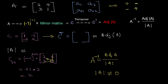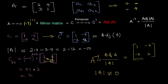To get the cofactor transpose, I turn rows into columns, giving the adjoint matrix as 1, minus 4, minus 3, 2. For the determinant, I multiply 1 by 2 and subtract 3 times 4: the determinant equals 2 times 1 minus 3 times 4, which is 2 minus 12, giving minus 10. The inverse matrix is the adjoint divided by minus 10, giving elements 1 over 10, negative 2 over 5, 3 over 10, and negative 1 over 5.